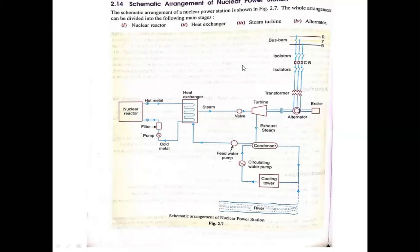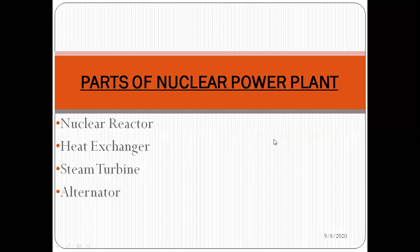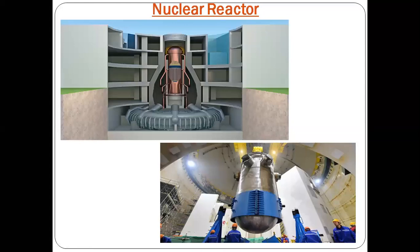As already discussed, there are four main parts of the nuclear power plant: the nuclear reactor, the heat exchanger, the steam turbine, and the alternator. Now you can see this is the pictorial view of a nuclear reactor. One of the most important things to understand is that the nuclear reactor is placed inside the earth - a few meters deep - so that if there is any leakage of radioactive rays, it remains underground.